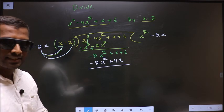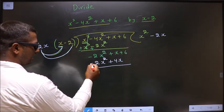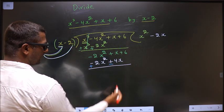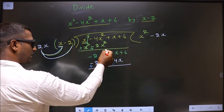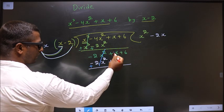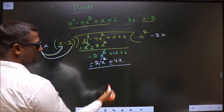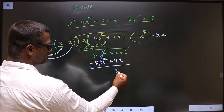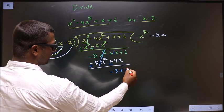Change the signs. Here it is minus, make it plus. Here it is plus, make it minus. Now this cancels out. Here it is plus 1x, here it is minus 4x, result is minus 3x. Plus 6.